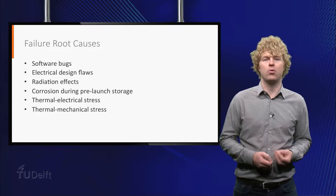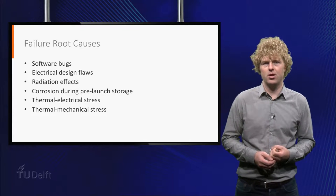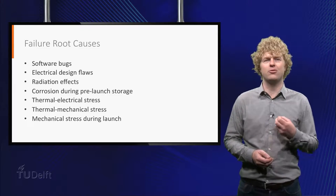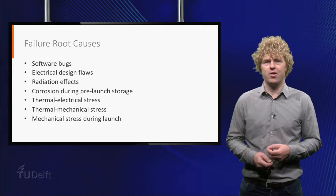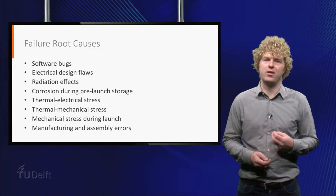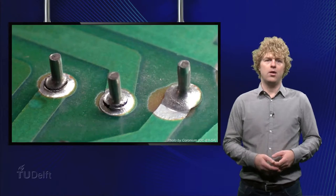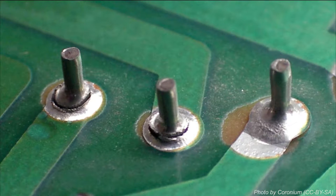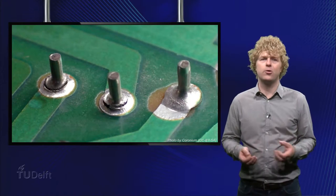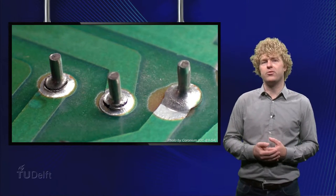Both can lead to open or short circuits or change the electrical properties of a device. During the launch there can be extreme vibrations due to the awesome amount of power generated by the rockets. Finally, there can be component manufacturing errors or assembly errors of components. Here you can see an example of how a bad solder joint in combination with mechanical stresses can lead to an open circuit fault. While most failure causes are pretty straightforward like this example, we will pay some more attention to radiation.